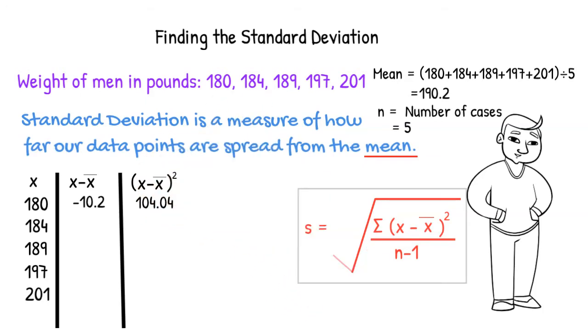184 minus the mean, 190.2, gives us negative 6.2. We square that value and get 38.44.